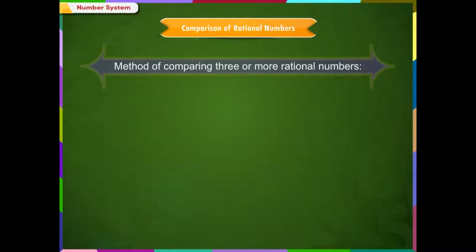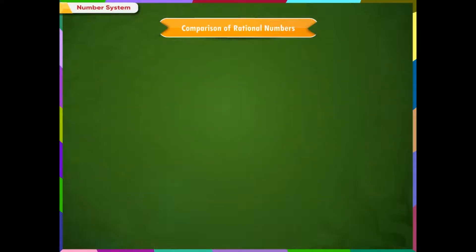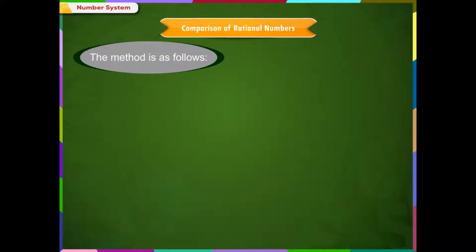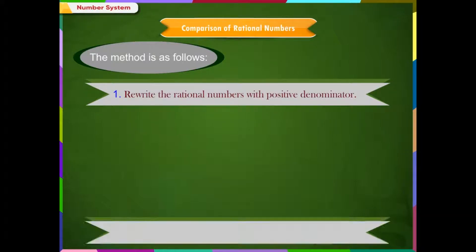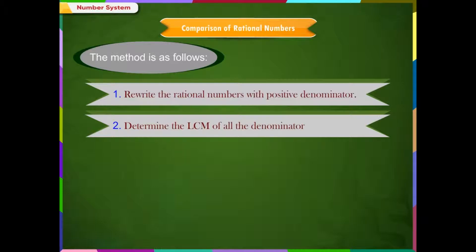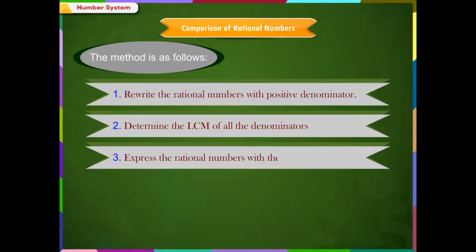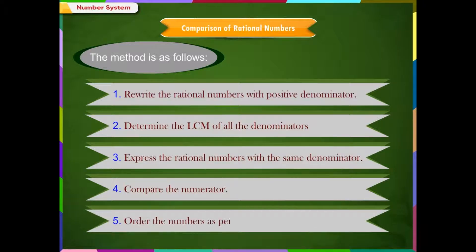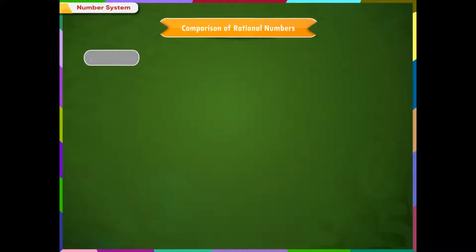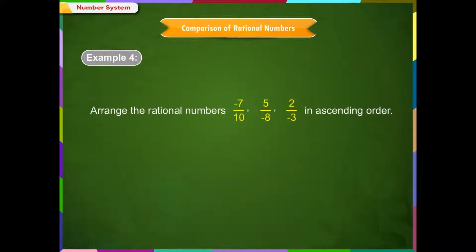Method of comparing 3 or more rational numbers. The method is as follows: 1. Rewrite the rational numbers with positive denominator. 2. Determine the LCM of all the denominators. 3. Express the rational numbers with the same denominator. 4. Compare the numerators. 5. Order the numbers as per the question asked. For example, arrange the rational numbers -7/10, 5/-8, and 2/-3 in ascending order.